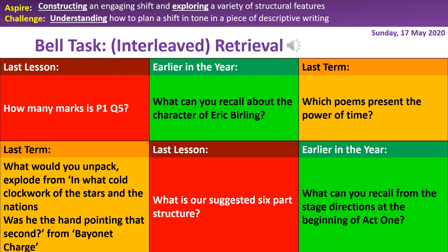Moving on to Power and Conflict Poetry: which poems present the power of time? The first is 'Ozymandias.' Ozymandias was a leader who believed his legacy would last, but as the poem ends we see his power has decayed. Remember that lovely oxymoron — 'colossal wreck' — that's boundless and bare. We've got the power of time and the power of nature levelling things out, and by the end of the poem Ozymandias has lost his power through time.